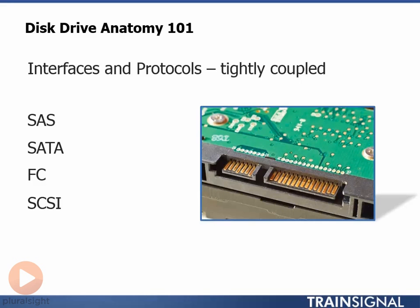Another drive type increasing in popularity is the Near-line SAS drive, or NL SAS. These drives are hybrids between SATA and SAS drives — they have the physical interface of a SAS drive and speak the SAS protocol, but they have the platter and build quality of a SATA drive, which comes across most notably in the rotation speed and capacity. SCSI drives are based on the SCSI protocol and also have a physical SCSI interface. They were really popular previously, but have been pretty much superseded by SAS drives.